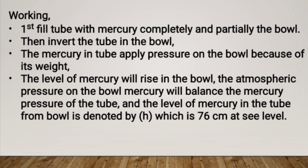The mercury in the tube applies pressure on the bowl because of its weight. The mercury in the tube partially drops down. The atmospheric pressure on the bowl balances the mercury, causing the level of mercury to rise in the bowl.